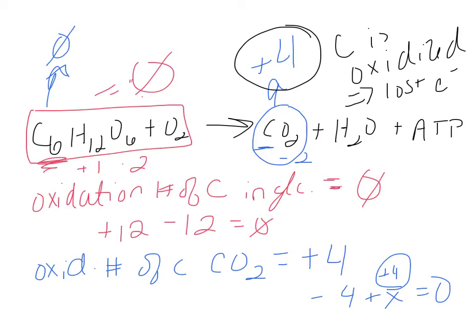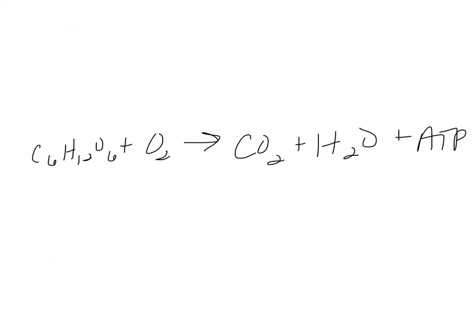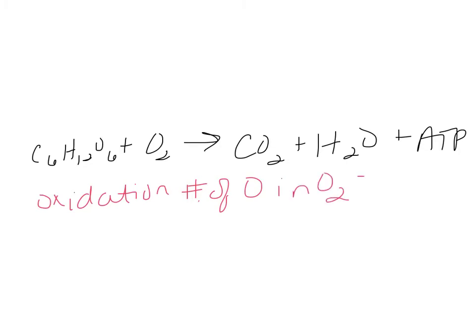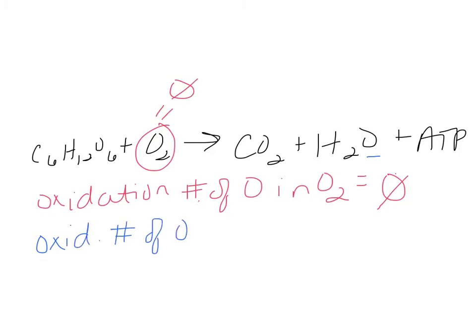Glycolysis has an energy investment phase — that's where it requires an input of two ATPs for the reaction to start. Those two ATPs begin to split the glucose. We take that glucose and split it into fructose diphosphate, because we've phosphorylated the molecule and split it. You're going to see pictures of glycolysis in your book listing many steps and enzymes, but you do not have to memorize those.